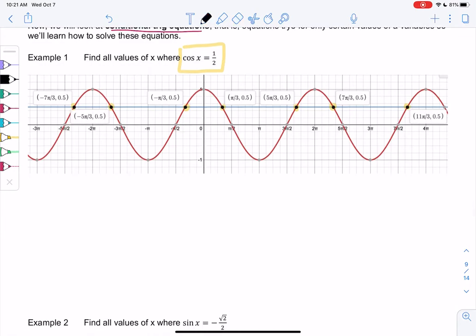The way I would do this without the graph is I would sketch the unit circle. When does cosine equal one-half on the unit circle? Pi over three. The x value is one half, the angle is pi over three.